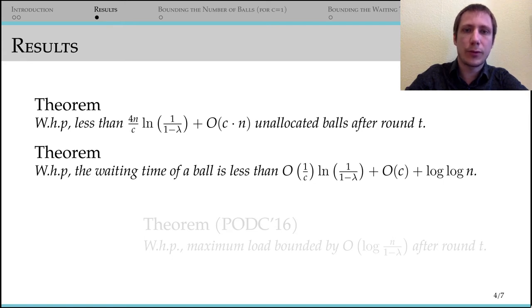So to summarize our results, we show that there exists a finite sweet spot for the capacity, which depends on the arrival rate lambda.